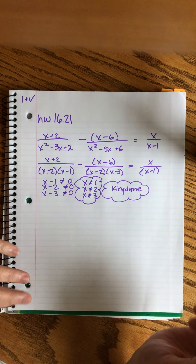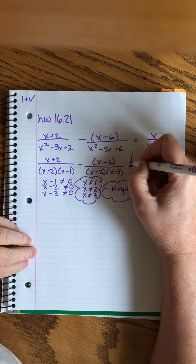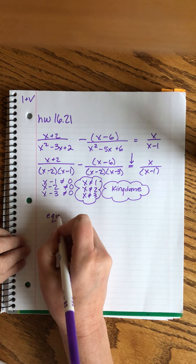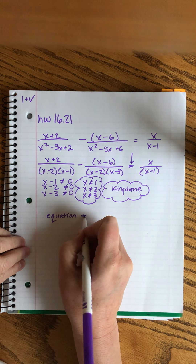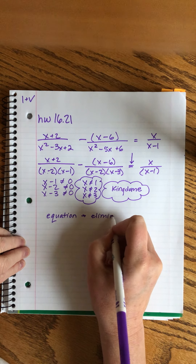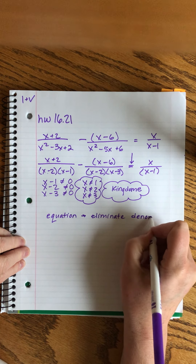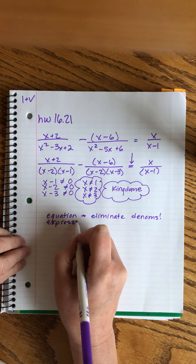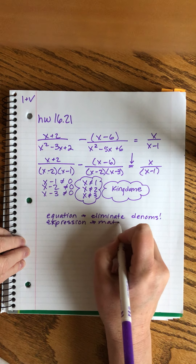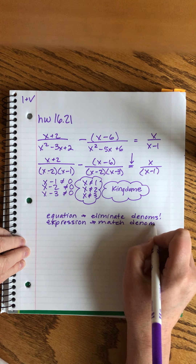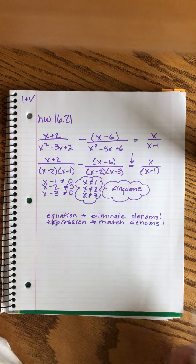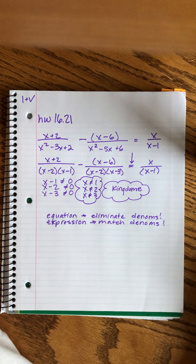The answer to that question is right there in that equal sign. When we have an equation with fractions, we can eliminate the denominators — we can do it. If we have an expression, we can only match the denominators. Notice 'denominators' abbreviated looks almost like 'demons' — I find that quite apropos. But because we have an equation, there's hope and we know that we can eliminate them altogether.